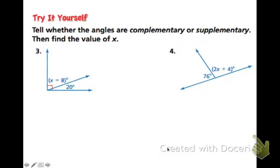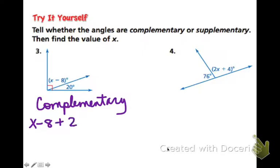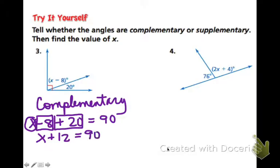First, decide if they're complementary or supplementary. Do they form a right angle or a straight line? In problem 3, they are complementary. So write your equation. x minus 8 plus 20 equals 90. So combine some like terms here. A negative 8 and a positive 20 make for 12. So we get subtract 12 from both sides.